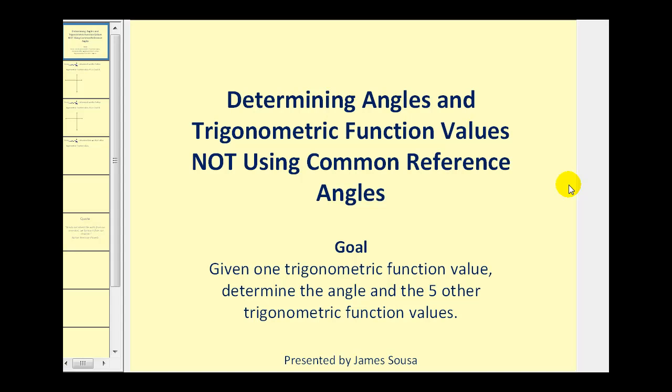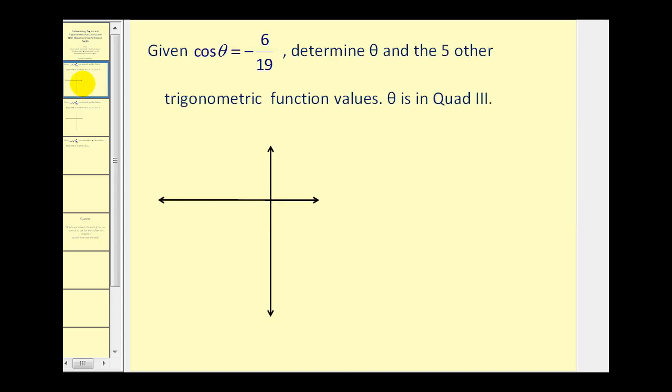Welcome to a lesson on determining angles and trig function values not using common reference angles. The goal of this video is, given one trig function value, to determine the angle and the five other trig function values. In this problem, we're given that cosine theta is equal to negative six-nineteenths, and we want to determine theta and the five other trig function values, given that theta is in the third quadrant.